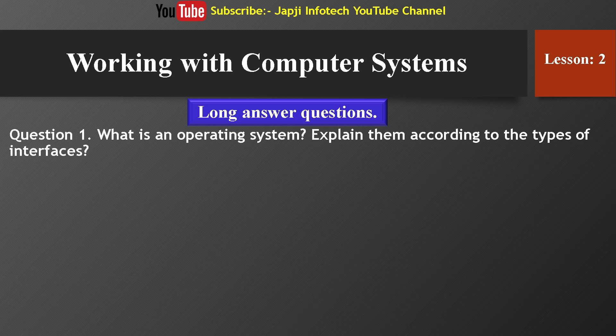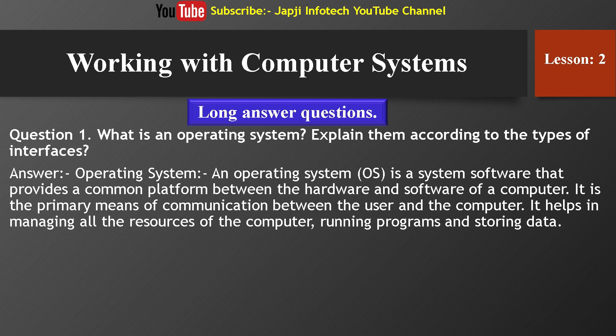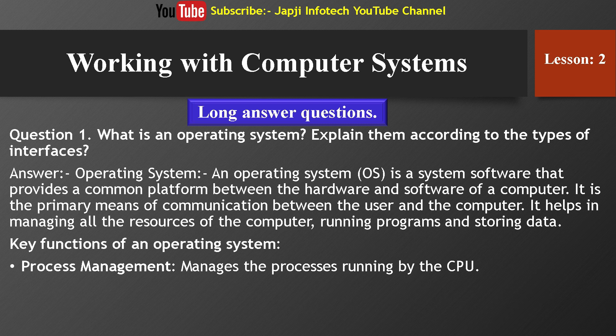Long answer question: What is an operating system? Explain the types of interfaces. An operating system is system software that provides a common platform between the hardware and software of a computer. It is the primary means of communication between the user and the computer. It manages all the resources of the computer, runs programs, and stores data. Key functions include: Process Management — managing processes running on the CPU.